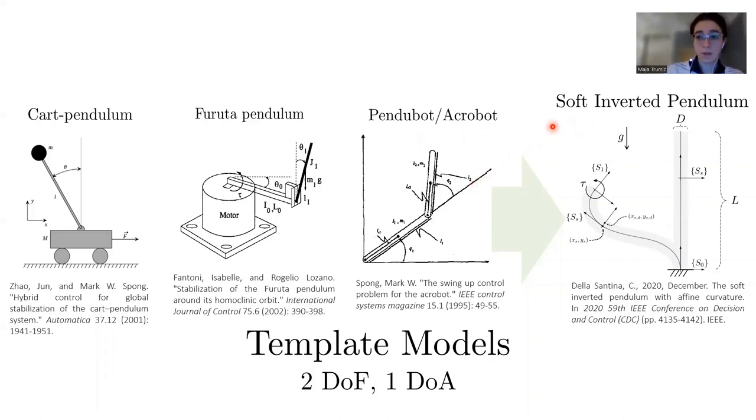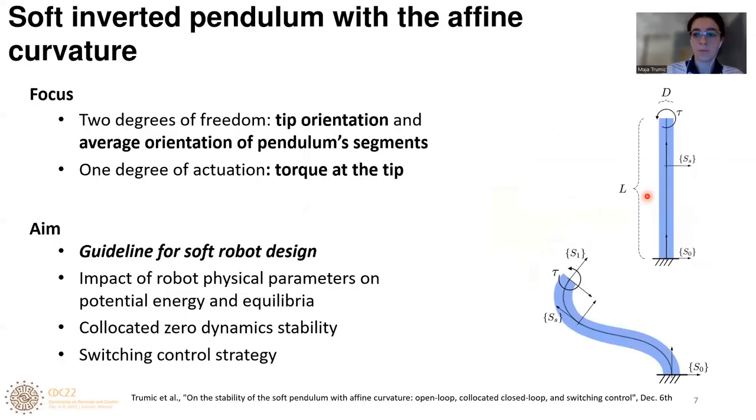Therefore, similarly to these previous models, our soft inverted pendulum has two degrees of freedom and one degree of actuation. One degree of freedom is the tip orientation and another degree of freedom is the average orientation of pendulum segments, while the actuation is the torque that acts at the tip of the robot.